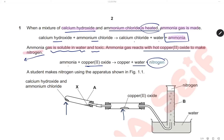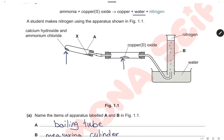Students make nitrogen using the apparatus shown. In the first part we will react calcium hydroxide with ammonium chloride to produce ammonia gas. Then ammonia gas will pass over the copper(II) oxide to produce nitrogen, and nitrogen gas will be collected. First, name the items of apparatus labeled A and B. A is a boiling tube where we heat the first mixture, and B is the measuring cylinder where we collect nitrogen gas.